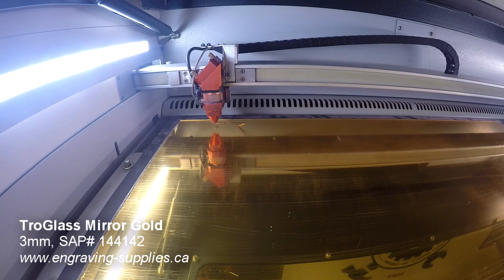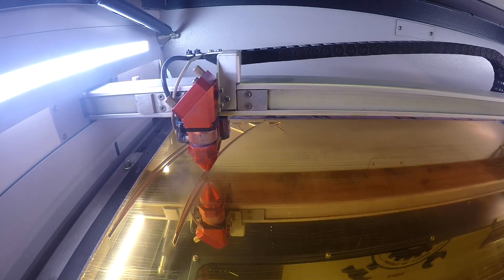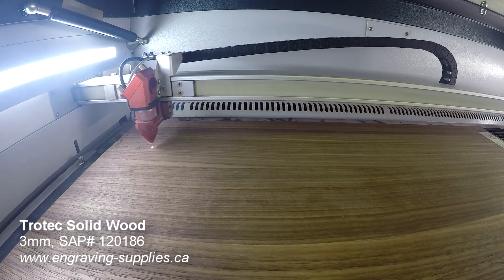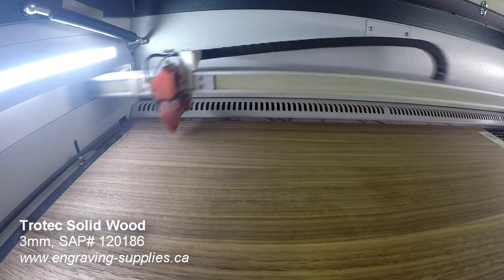I then cut the star shape out of Trotec Glass Mirror Gold Acrylic. I use Makeabox.io to create a base for my trophy. I use Trotec Solid Wood Walnut for the base.